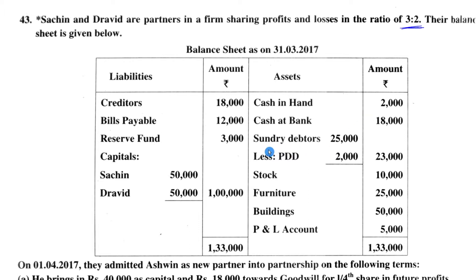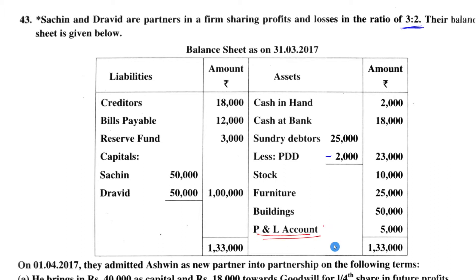Next we have sundry debtors 25,000, less provision for doubtful debts 2,000, giving 23,000 — meaning last year there was a provision for doubtful debts of 2,000 rupees. Next: stock 10,000 rupees, furniture 25,000, building 50,000, and profit and loss 5,000 rupees. This profit and loss entry represents a loss occurring in the current year.